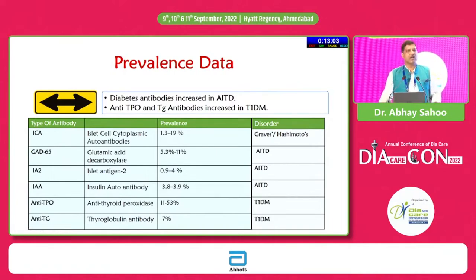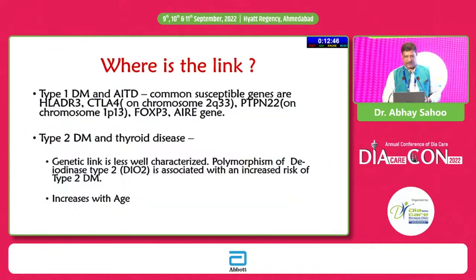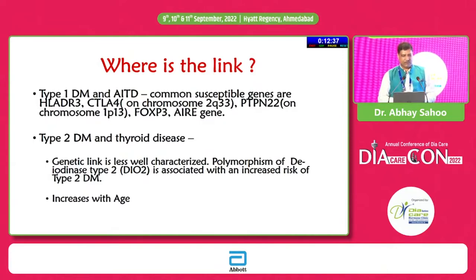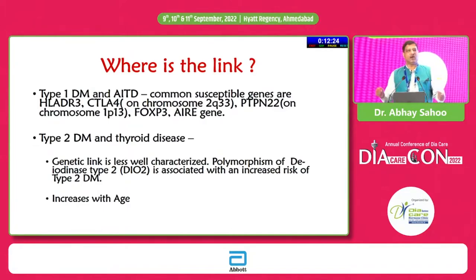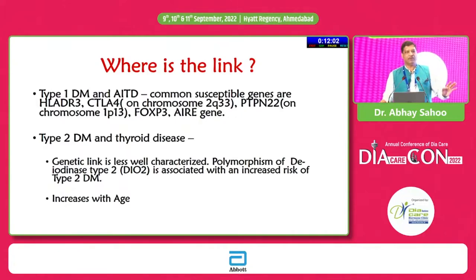The link between type 1 diabetes and autoimmune thyroiditis includes common susceptible genes: HLA-DR3, CTLA-4, PTPN-22, FOXP3, and AIRE gene. This genetic link is not clearly described for type 2 diabetes, though some studies show genetic polymorphism of DIO2 (deiodinase type 2) is associated with increased risk. Increased age is another factor combining both conditions in clinical practice.